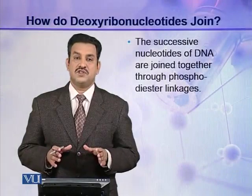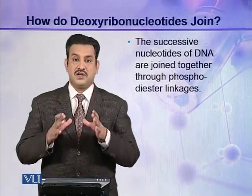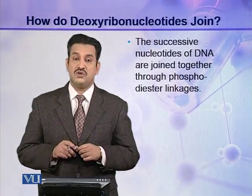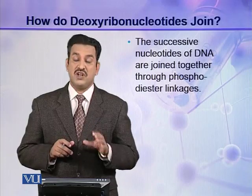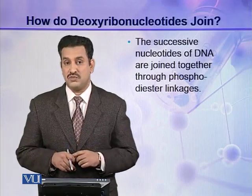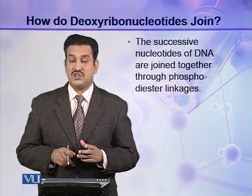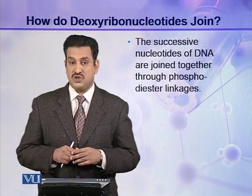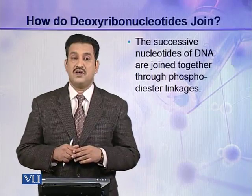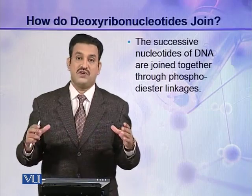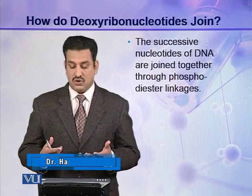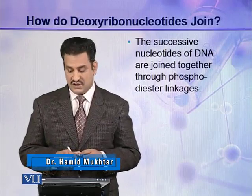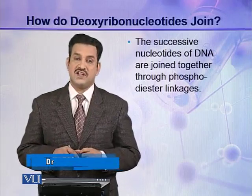As you have seen, a nucleotide is made up of three components, but a DNA molecule is a polymer of these deoxyribonucleotides. The next question is how different deoxyribonucleotides are joined together to make a polymer of DNA — a polynucleotide. The successive nucleotides of DNA are joined together through phosphodiester linkage.